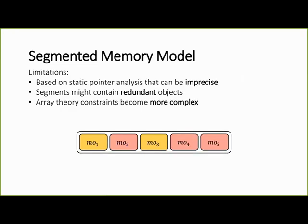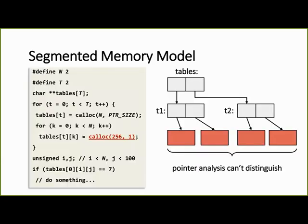This approach has some limitations. It's based on static pointer analysis which can be imprecise, which may result in segments that contain many redundant objects. And then the array theory constraints might become more complex. In our example, the four red objects are allocated at the same line, so pointer analysis cannot distinguish between them, and they will be mapped to the same segment.